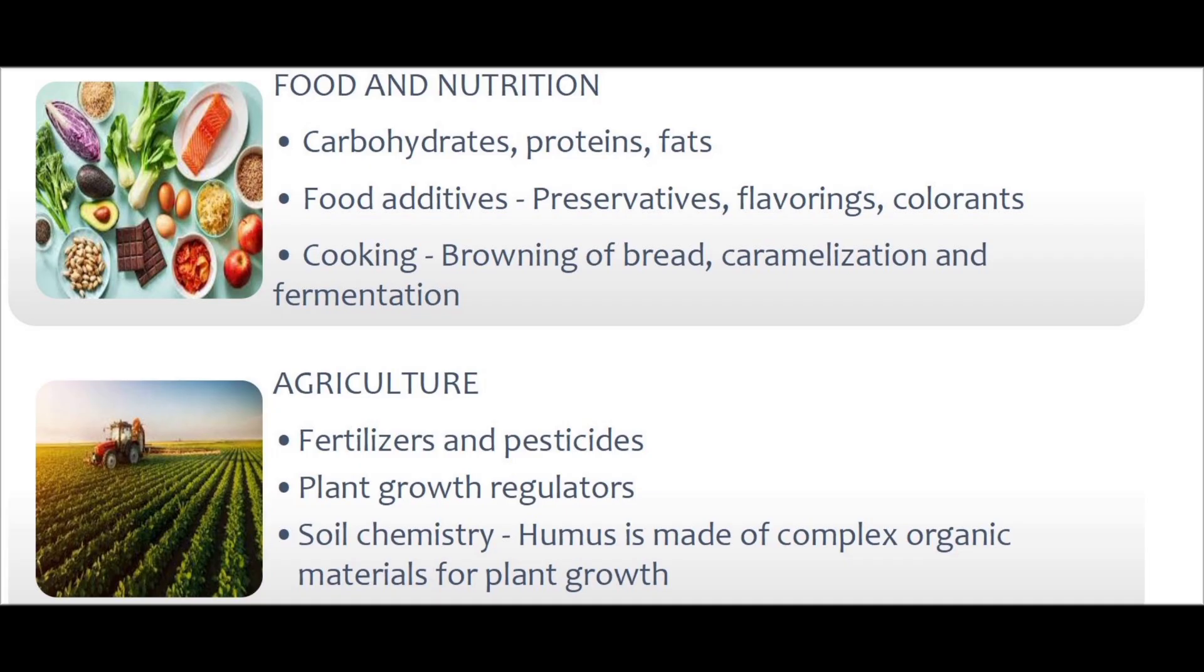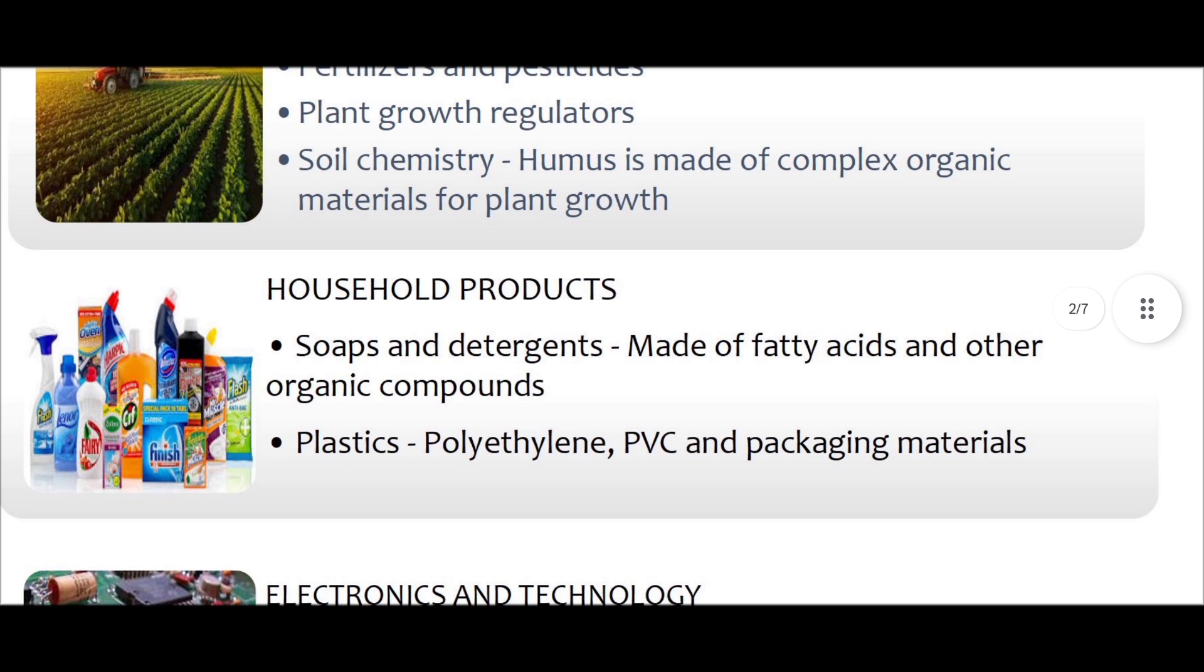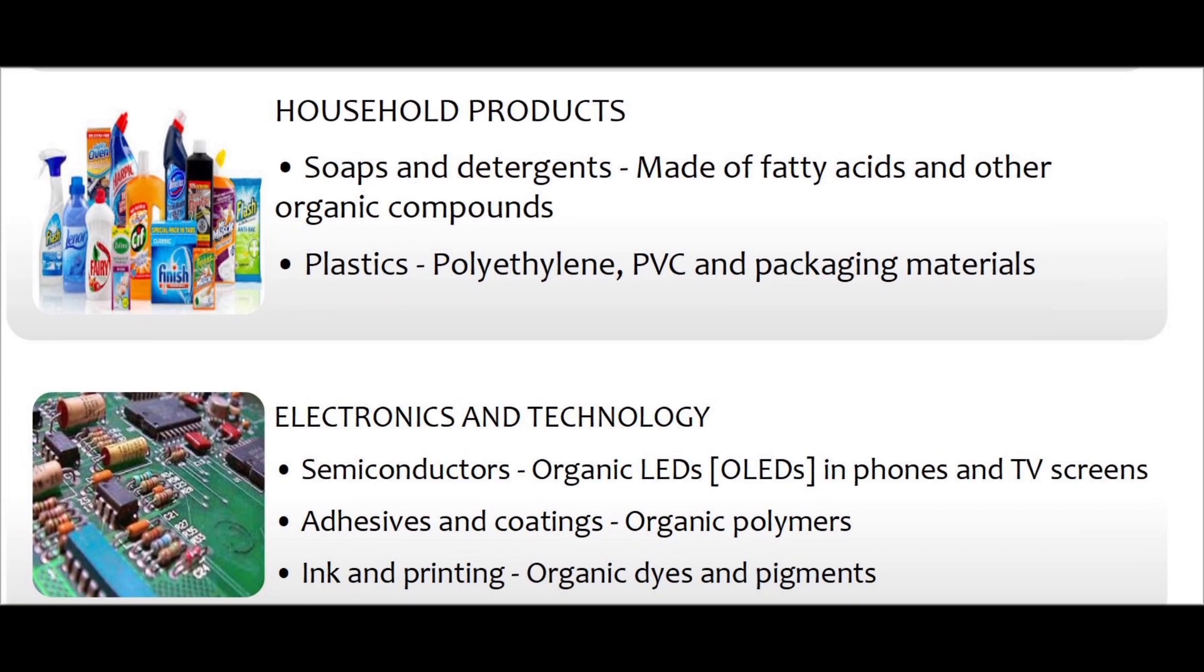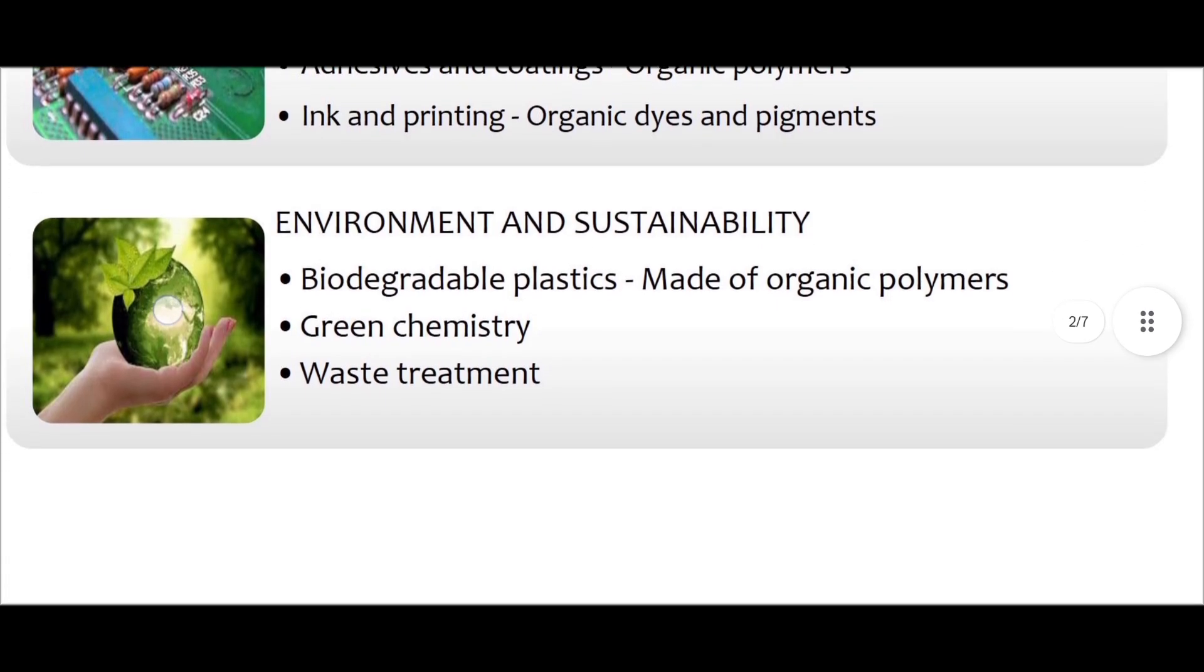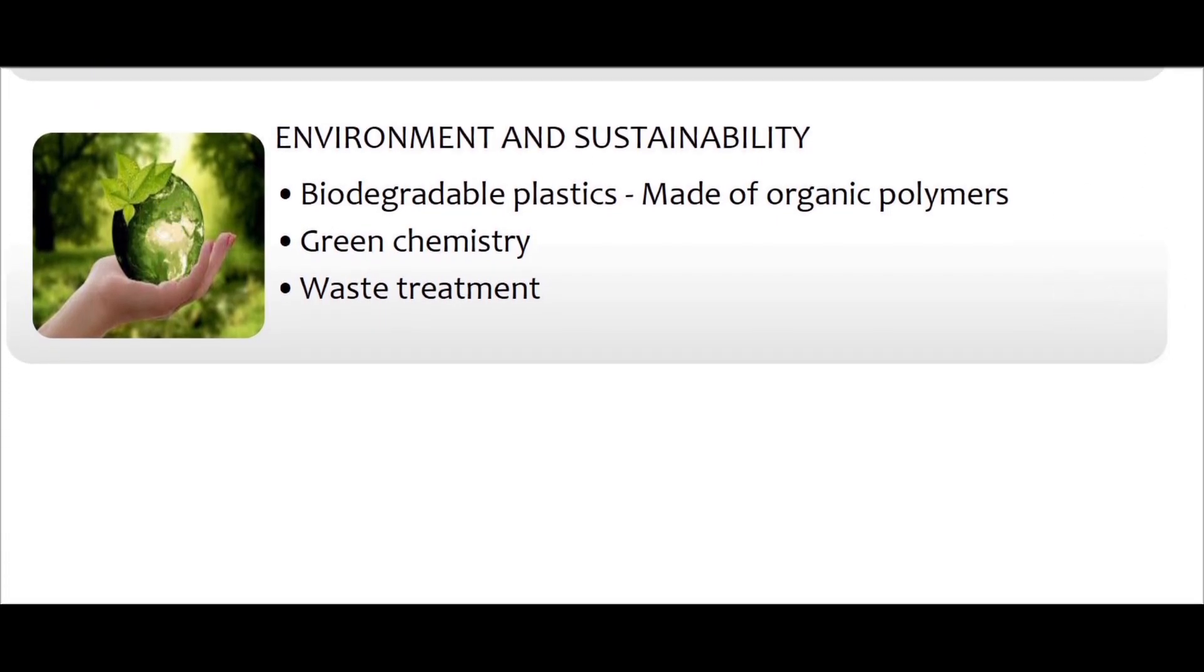When it comes to household products, you have soaps and detergents which are made of fatty acids and other organic compounds, and plastics—for example, polyethylene, PVC, and packaging materials. In electronics and technology, there are semiconductors made of organic LEDs, also known as OLEDs, in phones and TV screens. Adhesives and coatings make use of organic polymers. Ink and printing also use organic dyes and pigments. In environment and sustainability, you have biodegradable plastics made of organic polymers, and green chemistry and waste treatment also make use of organic chemistry.